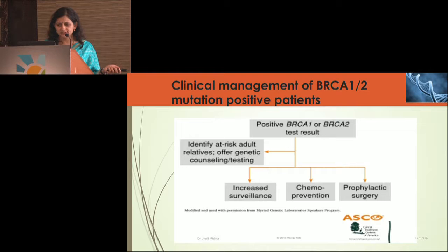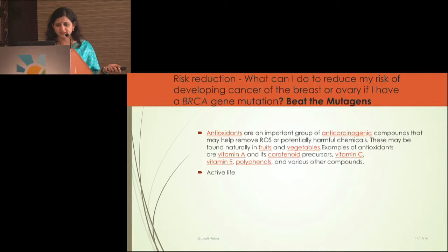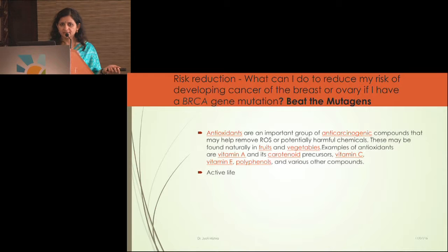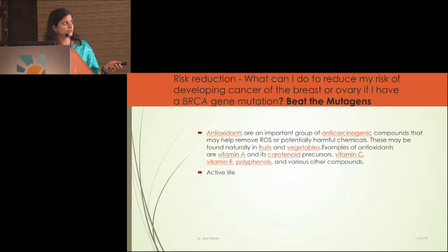How do we manage BRCA1-positive patients? Increased surveillance, chemoprevention, and prophylactic surgery. Regarding mutagens causing mutations — if we cut the source, we can beat chemical mutations and ultraviolet radiation mainly by increasing antioxidant intake in our diet through fruits, vegetables, and other sources, and maintaining an active, healthy life.